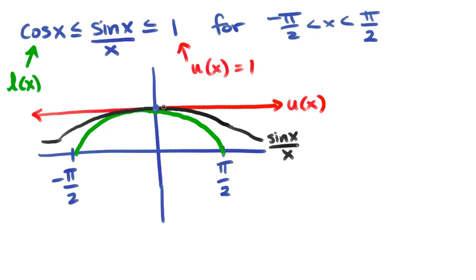Because the limit as x approaches 0 of u of x and L of x, the lower and the upper functions, both approach 1 at x equals 0, the sin x over x limit as x approaches 0 also has to approach 1.